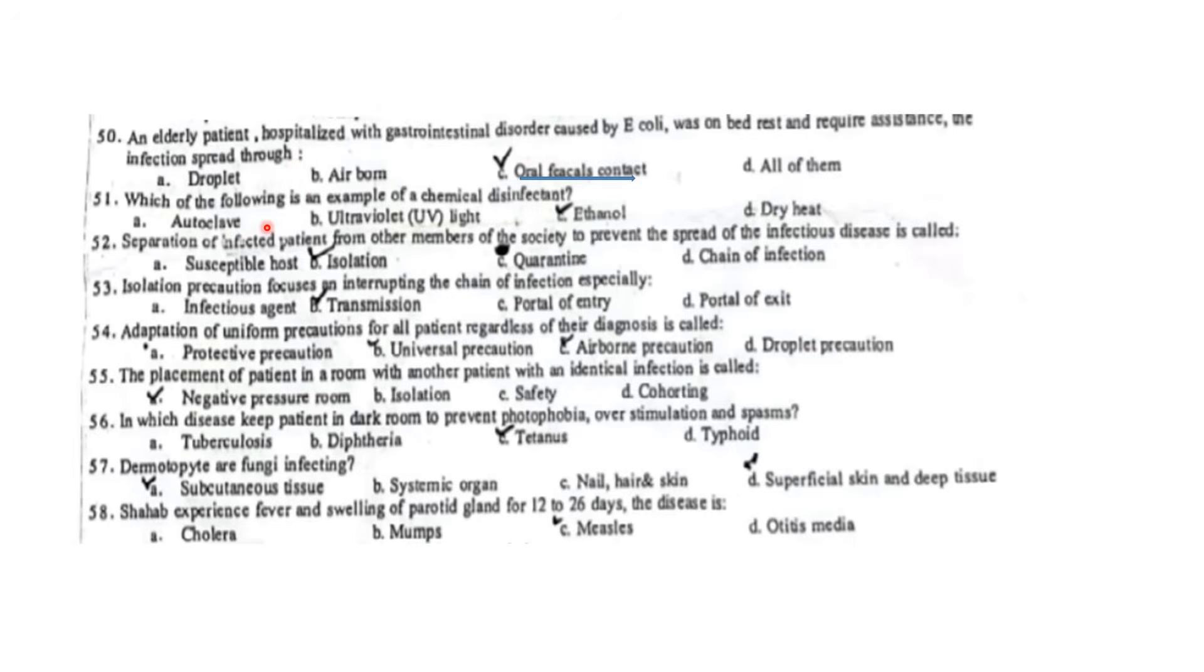Which of the following is an example of chemical disinfectant? Ethanol is a chemical disinfectant. Separation of infected patients from other members of society to prevent the spread of infection is called isolation. Isolation precautions focus on interrupting the chain of infection, especially transmission. Adoption of uniform precautions for all patients regardless of diagnosis is called universal precautions. The placement of a patient in a room with another patient with identical infection is called cohort isolation.